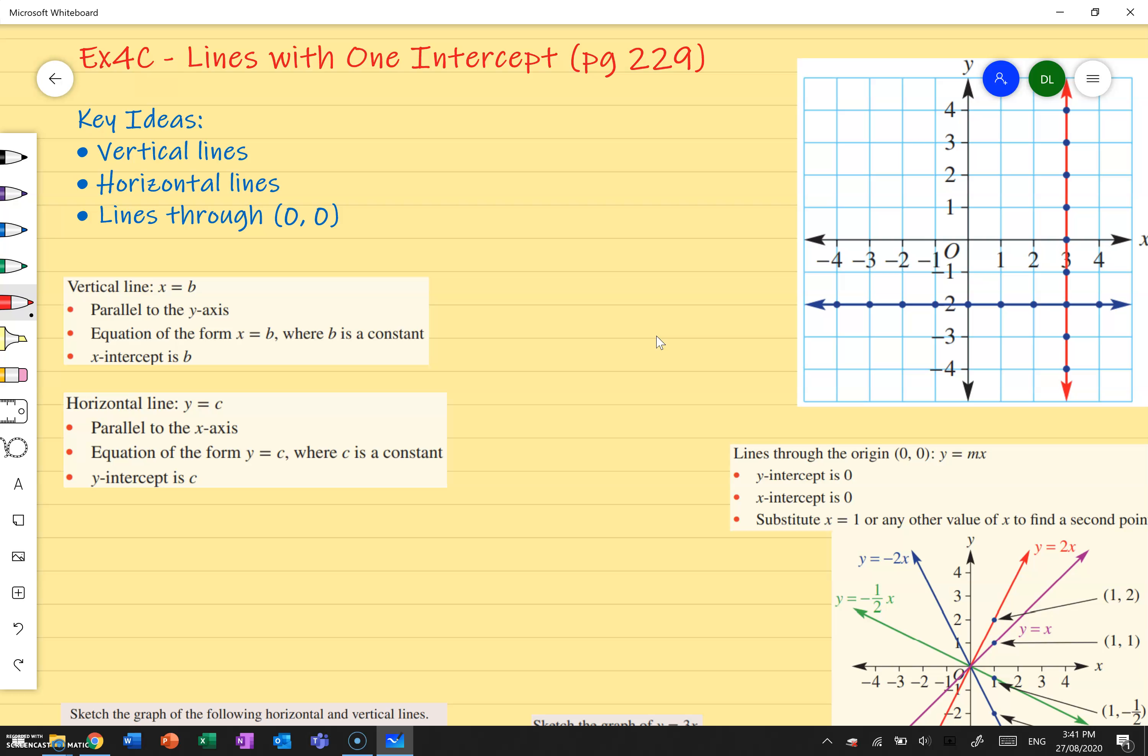So last lesson we talked about what happens if we have two intercepts, for example an x-intercept and y-intercept, how we can just connect the dots together and end up with our linear relation.